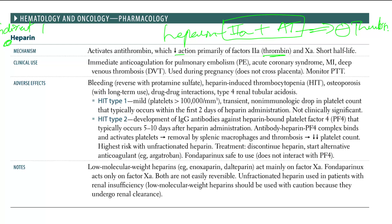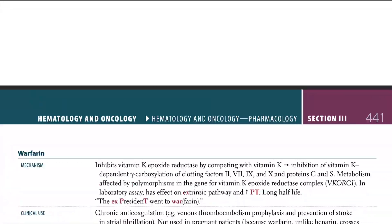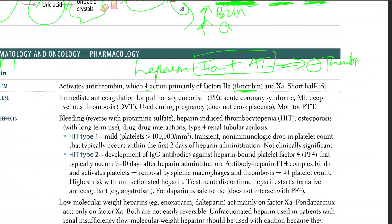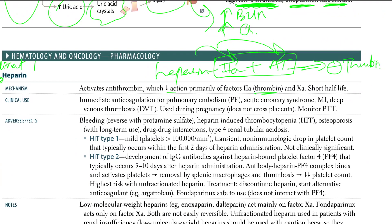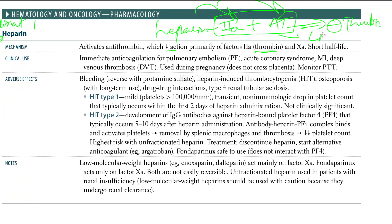Why is that important? Because heparin is a big molecule and it can bind to both in one place. Heparin is the only one which can do this — it cannot be done by low molecular weight heparin. Heparin, also called unfractionated heparin, can do this job, but low molecular weight heparin cannot.